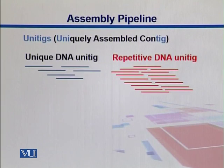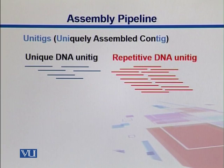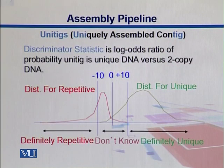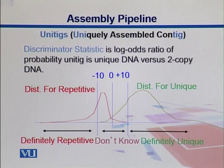This is an illustration from software showing what this process looks like. In this diagram we see there is a unique DNA unitig, and we also have a unitig coming from repetitive DNA. Unitigs coming from repeats versus those from unique regions can be separated using a process called discriminator analysis, where you discriminate between what is unique versus what is not unique.